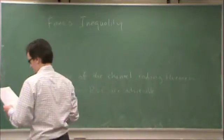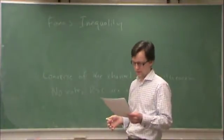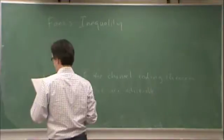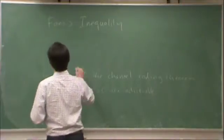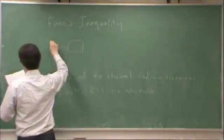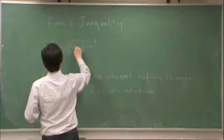In Fano's Inequality we have basically a relationship between entropy and probability of error. So, the setup is, we have channel inputs x, channel outputs y, and here's the channel.